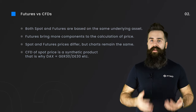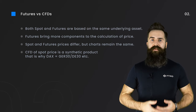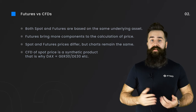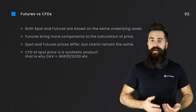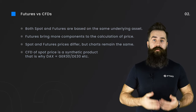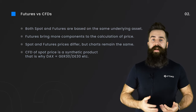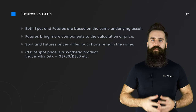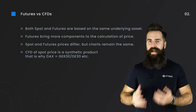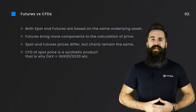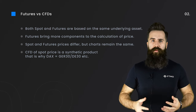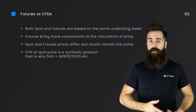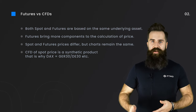In the case of DAX, it weighs the price of the top 30 German blue chip stocks. For example, there is Linde, which has a weight of 10% of the index price, SAP, Siemens, Allianz, Bayer, BMW, Adidas, and so on. The futures contract is based on the same underlying asset, but it brings other components into calculation, such as interest rate or time to expiration.